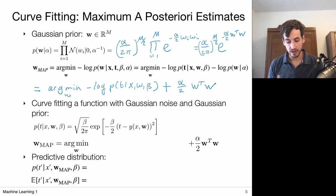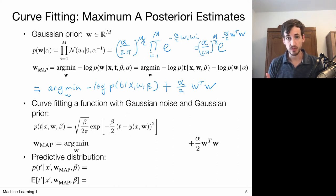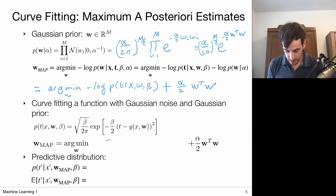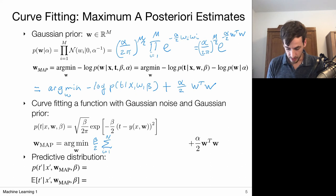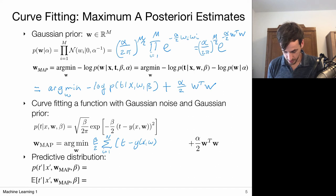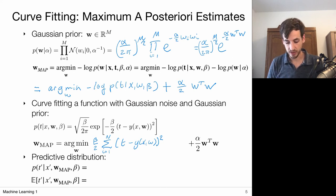Now inserting the log-likelihood: the likelihood for an individual data sample is given by the Gaussian model, and the likelihood of the entire dataset is the product of all individual likelihoods. Taking the negative log and ignoring the front factor gives the sum over all data samples of beta/2 times (t minus y(x, w)) squared. So the maximum a posteriori estimate for w is given by this least squares problem regularized with a quadratic penalty on w.